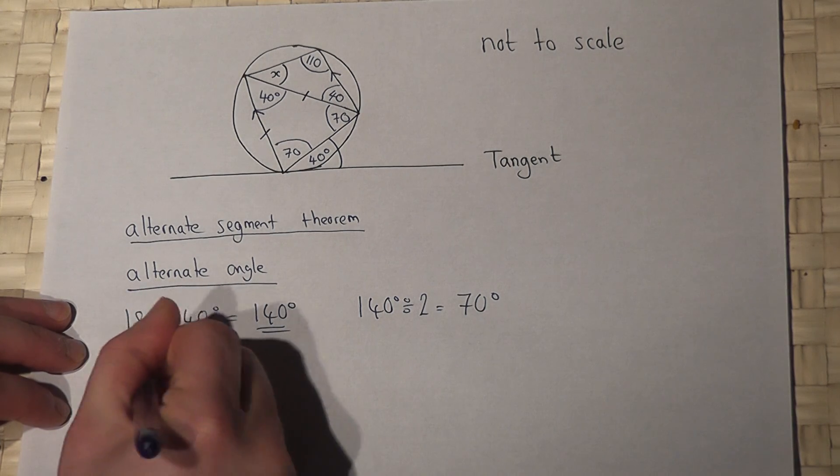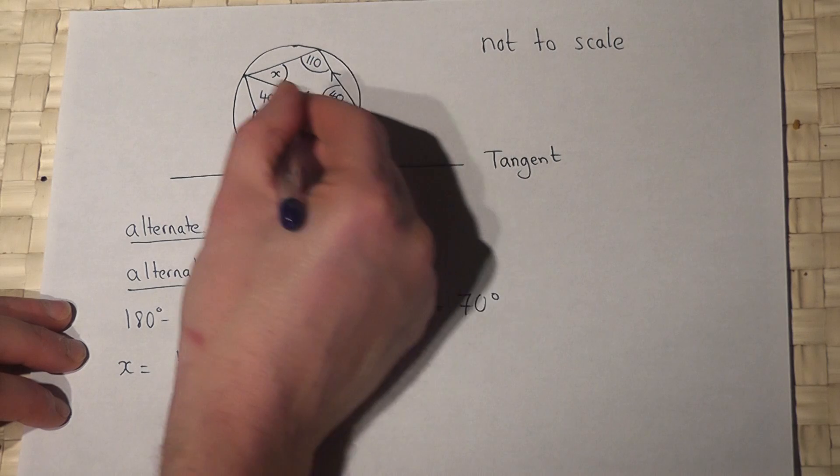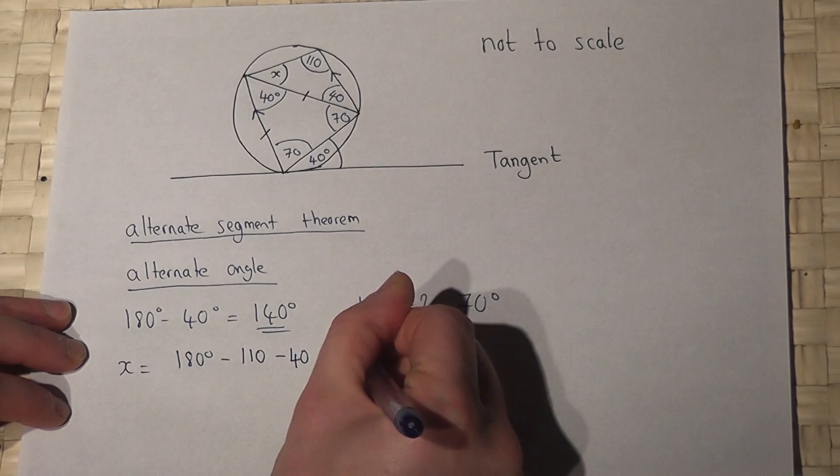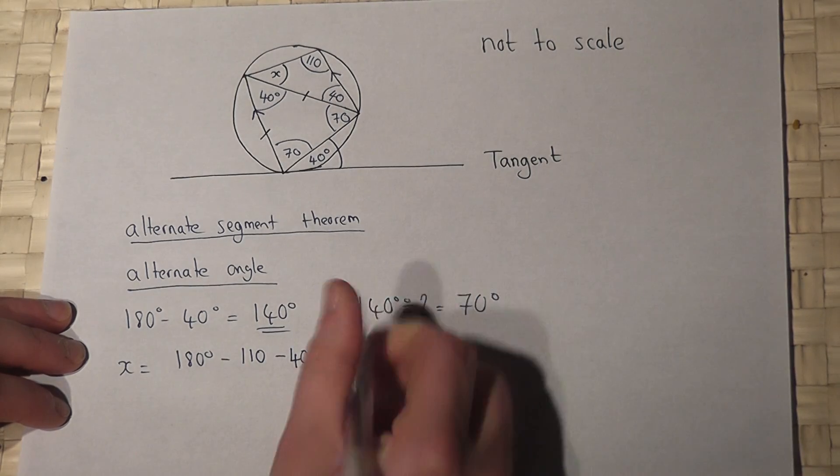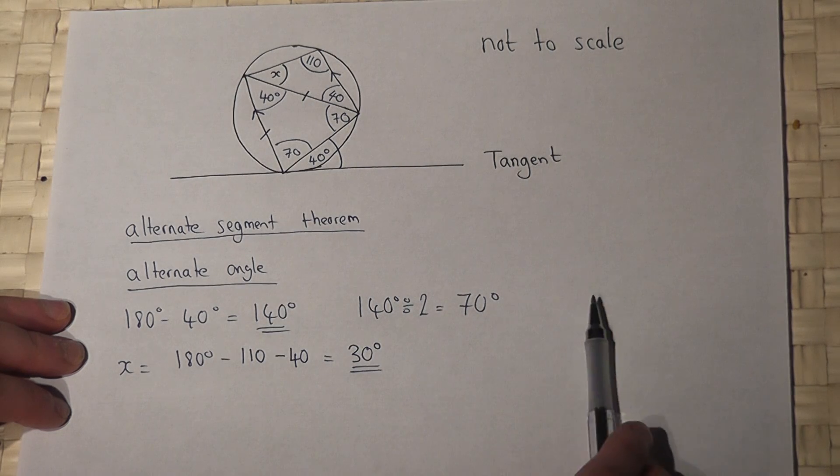So to find X, I'll do 180, because I look at this triangle here, take 110, take 40, which works out to be 30 degrees. So X has a size of 30 degrees.